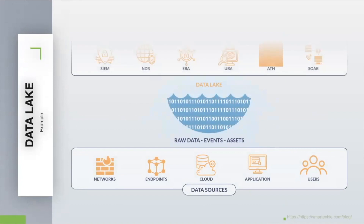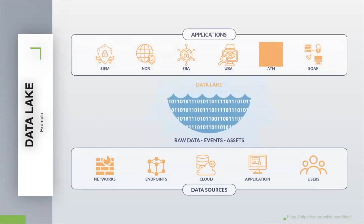This is how the data lake would look like. On one side, there are the data sources. In the middle is the data lake, and on the other side we find all the analytics stuff. Data sources would be things like networks, endpoints, cloud applications, users, IoT devices, and anything else.